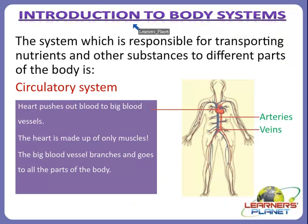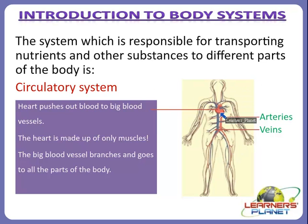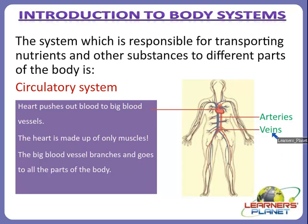The first system is the circulatory system, which is responsible for transporting nutrients and other substances to different parts of the body. This is a picture of the circulatory system showing a diagram of the heart. The red-colored vessels are the arteries and the blue ones are labeled as veins. Mainly these three things are present in the circulatory system: heart, arteries, and veins.